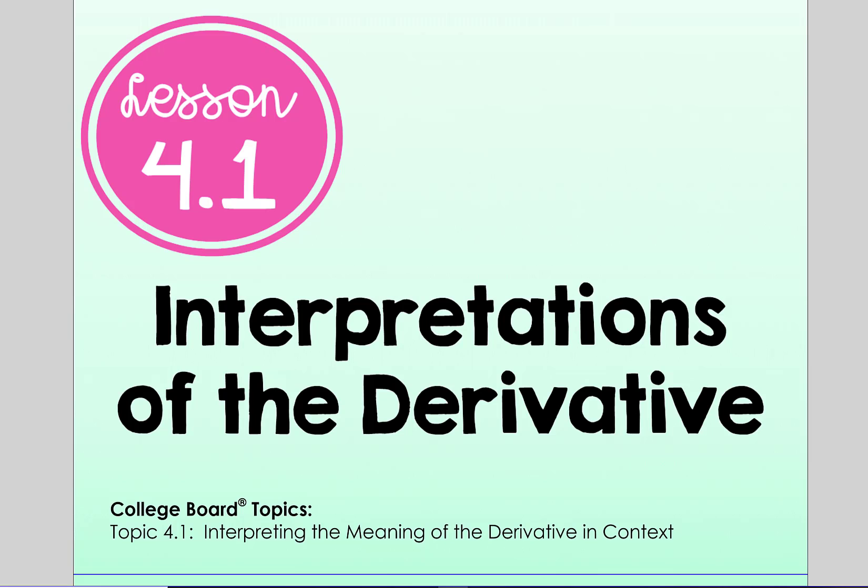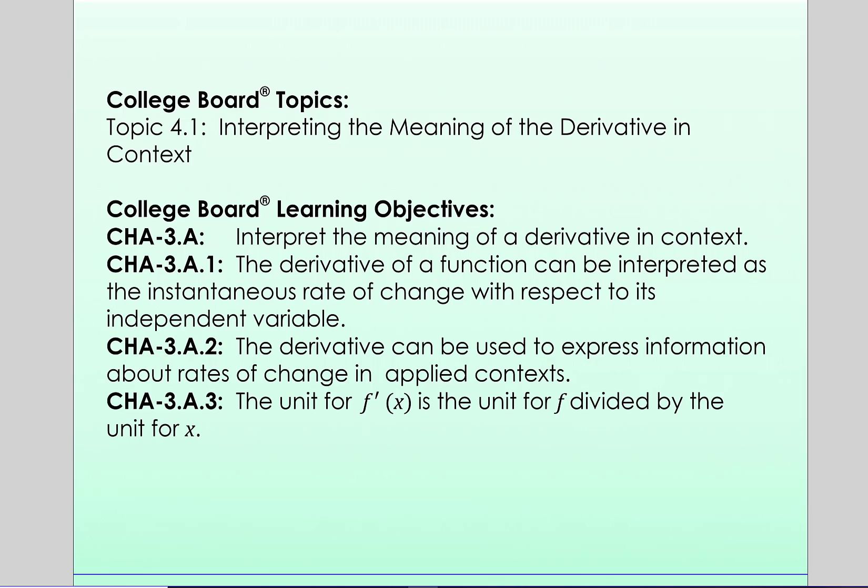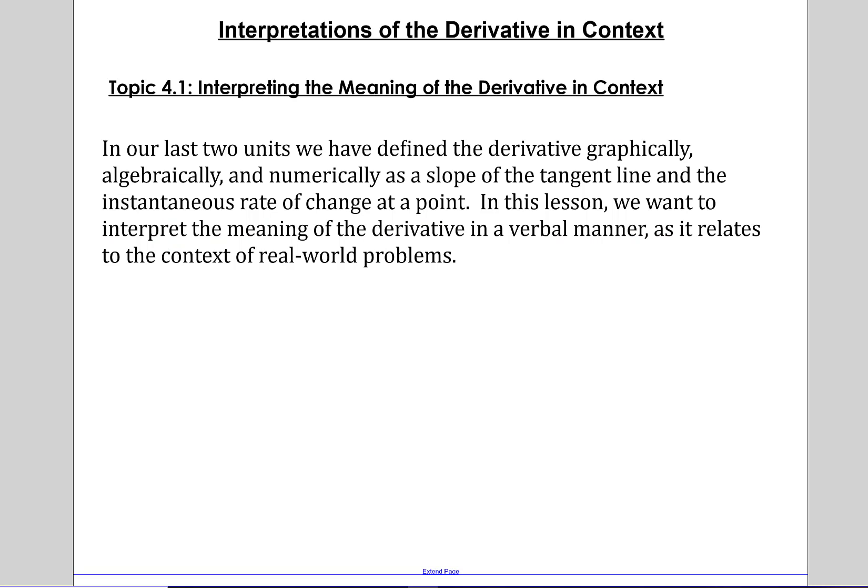Hello, here we are Chapter 4. We're talking about interpretations of the derivatives in AP Calc. In the last two units we defined the derivative graphically, algebraically, and numerically as a slope of the tangent line and the instantaneous rate of change at a point. But in this lesson we want to interpret the meaning of the derivative in a verbal manner as it relates to the context of real-world problems.